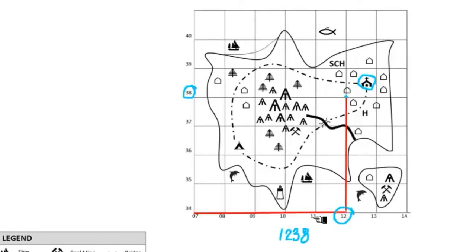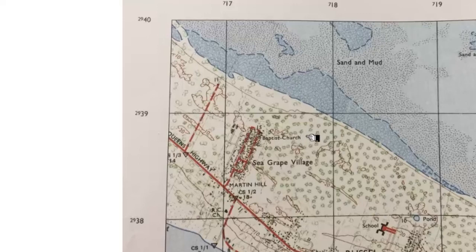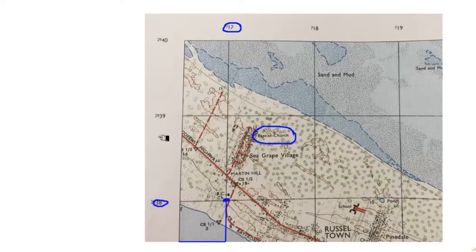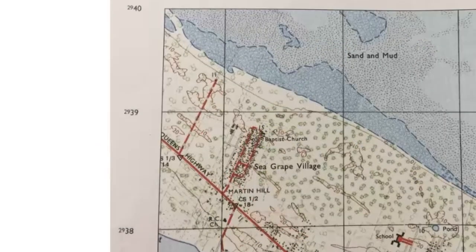Now of course maps are not as simplified as this, so let's use an actual map. Let's find the four-figure grid reference for the Baptist Church. First we mark off the lower left-hand corner of the square where the Baptist Church is located, then we go along the corridor and then up the stairs. We found that along the corridor we ended up at 17, and up the stairs we ended up at 38. So the four-figure grid reference for the Baptist Church is 1738.